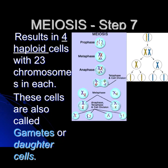Step seven results in haploid cells with 23 chromosomes in each. Here we have two on the left and one on the right, but the situation is the same for humans: 46 down to 23. These final cells at the bottom would be called gametes.